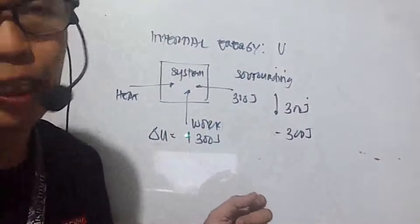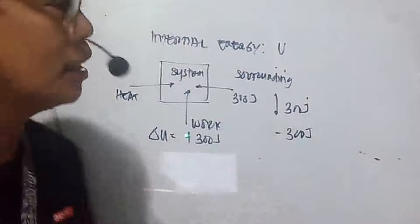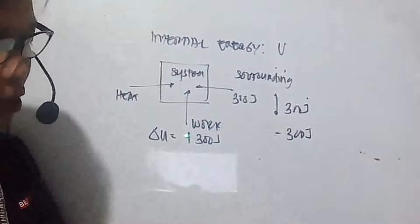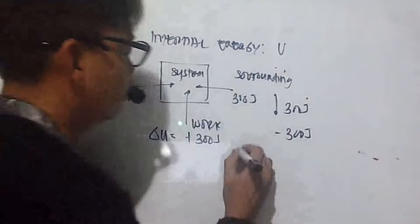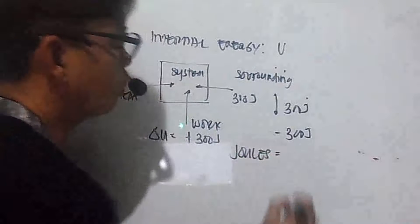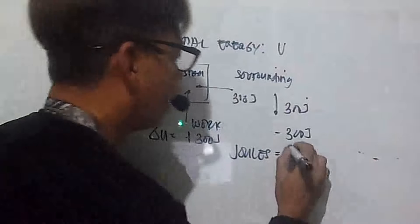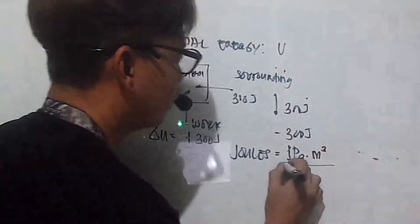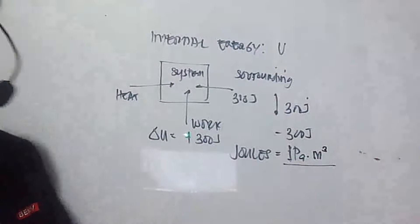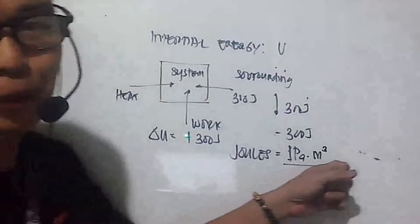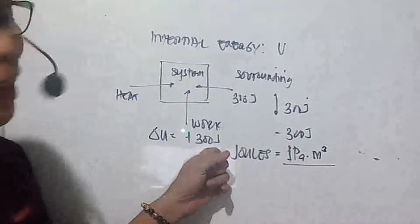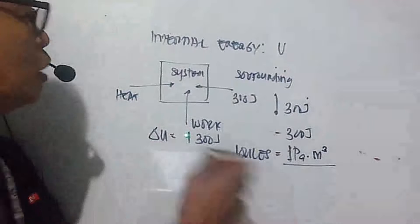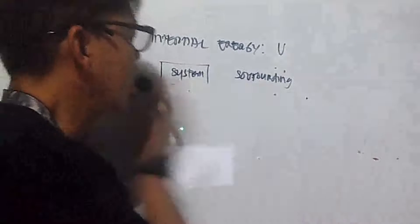Internal energy is symbolized by the capital letter U, and delta U represents the change in energy of the system — it can be positive or negative. One joule is equal to one pascal times cubic meter, so joules equal pascal per cubic meter. Now we have three types of systems.